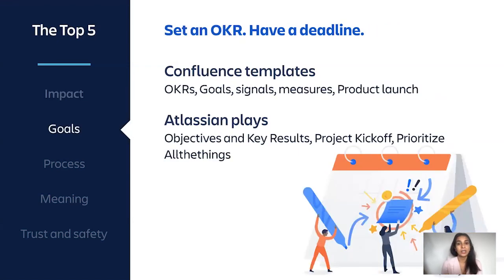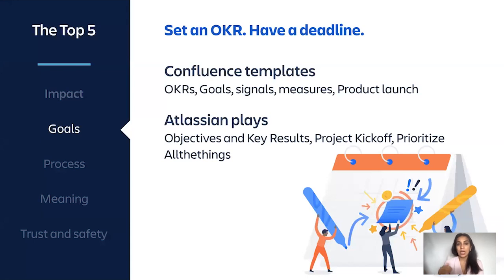Tip two: have an OKR and a deadline. With the Template Gallery, we knew what a good outcome looked like and we quantified it — and if you can quantify it, that's very powerful. We also knew what an amazing outcome looked like. Coupled with that, we had a timeline. It's easy to kick the deadline down the road, but the stricter you can be with the timeline, the more it helps you focus and prioritize — identify what's critical, what's nice to have, and what is a fast follow.